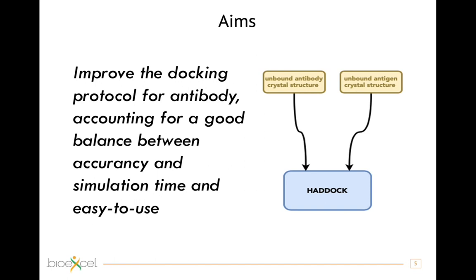A standard protocol is to take the unbound antibody structure and the antigen structure, usually from an experimental source, and plug them into a docking protocol — like the standard HADDOCK one — to get a model of the complex. We would like to improve this to get a better, higher-quality model, while maintaining a balance between accuracy and computation time, and producing something easy to implement in a distributable workflow.